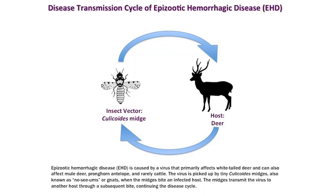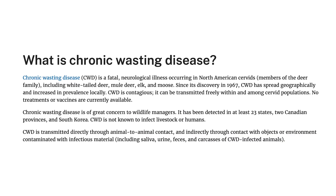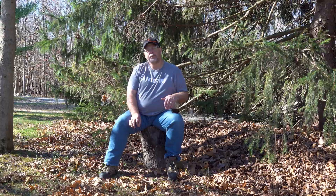EHD is caused by the colicoides little gnat, and that is viral. CWD — chronic wasting disease — is not at all. It's caused by a prion. CWD is a transmissible spongiform encephalopathy.